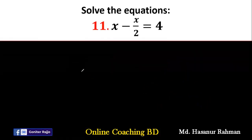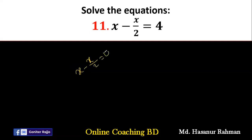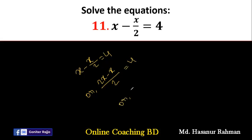Number 11 says x minus x by 2 equal to 4. The LCM is 2. We multiply through by 2: 2x minus x equal to 4 multiplied by 2. So 2x minus x is x, and 4 multiplied by 2 is 8. Therefore x equal to 8 is the solution.